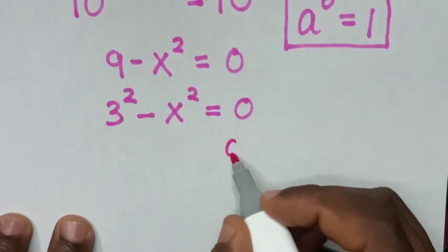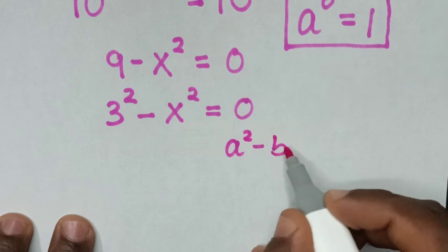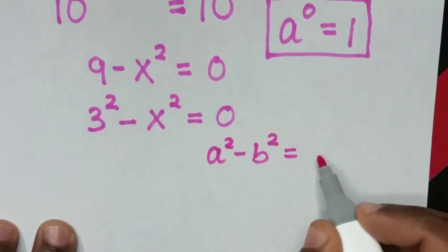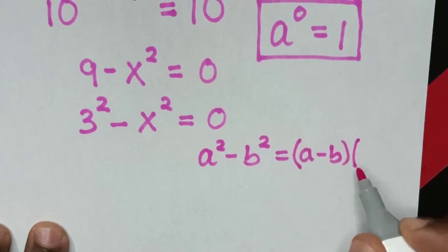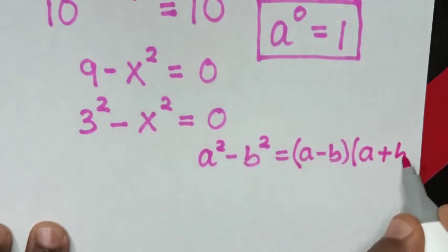So we'll apply the rule: a squared minus b squared equals a minus b times a plus b.